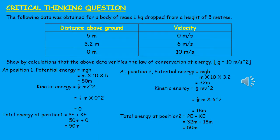Critical thinking question: The following data was obtained for a body of mass 1 kg dropped from a height of 5 meters. Distance above ground and velocity are provided. At position 1: height = 5 m, velocity = 0 m/s. We have to show by calculation that this data verifies the law of conservation of energy, where g = 10 m/s². At position 1: PE = mgh = 1 × 10 × 5 = 50 J. KE = ½mv² = ½ × 1 × 0² = 0 J. Total energy at position 1 = PE + KE = 50 + 0 = 50 J.